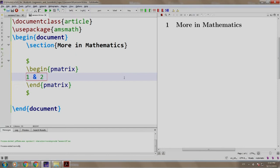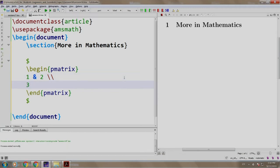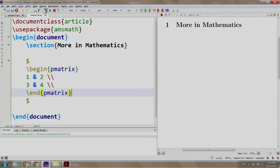slash slash which denotes I need to take another row 3 and 4. Let us display this. So we build and run. We have a matrix in round brackets 1, 2, 3, 4.